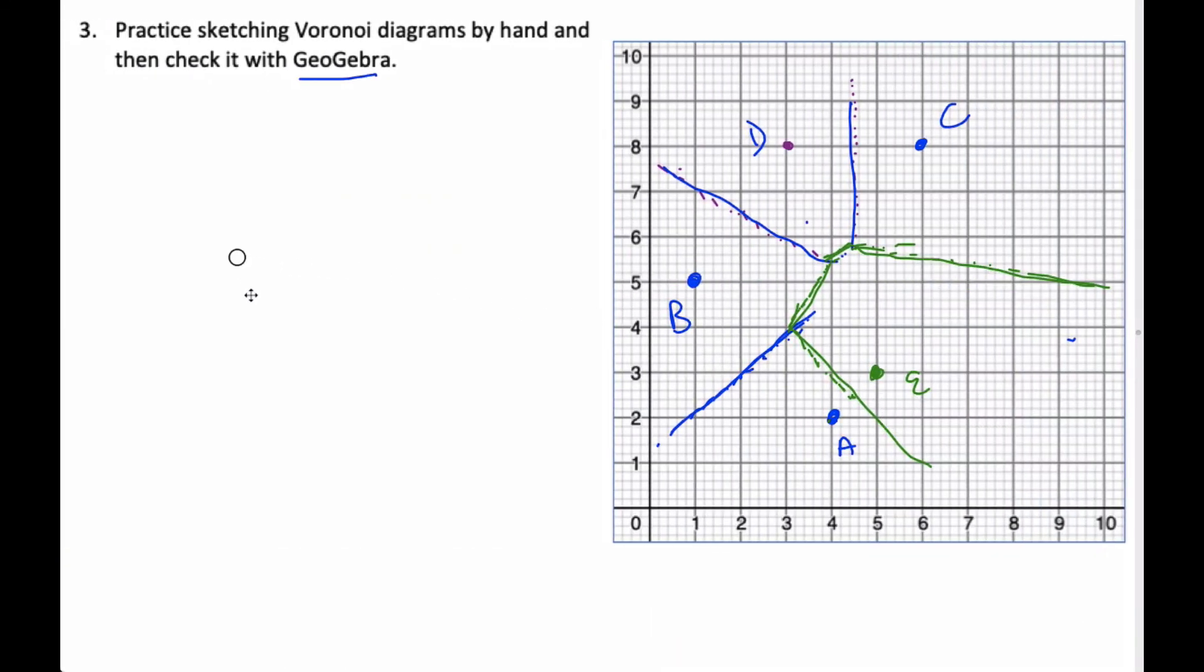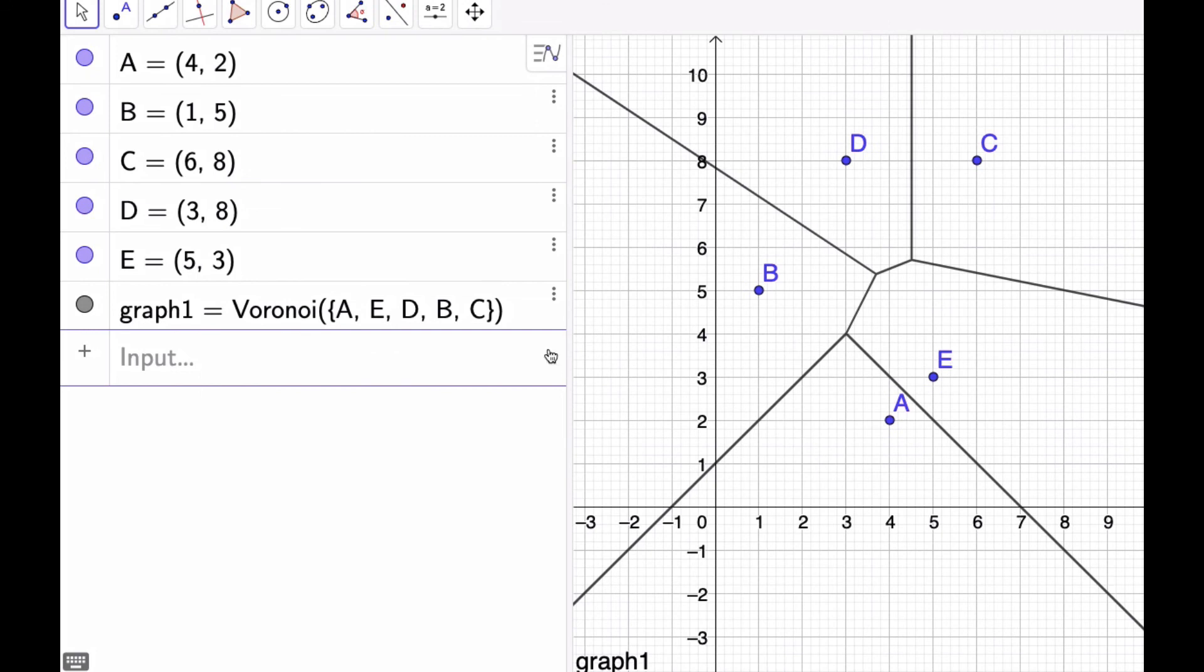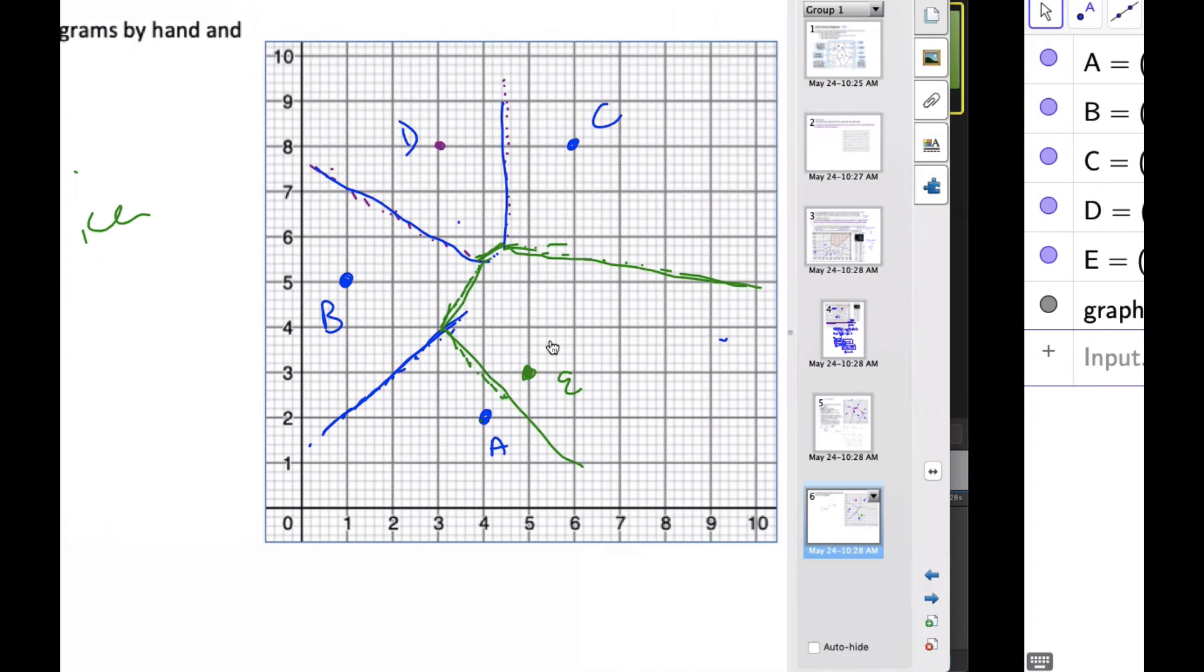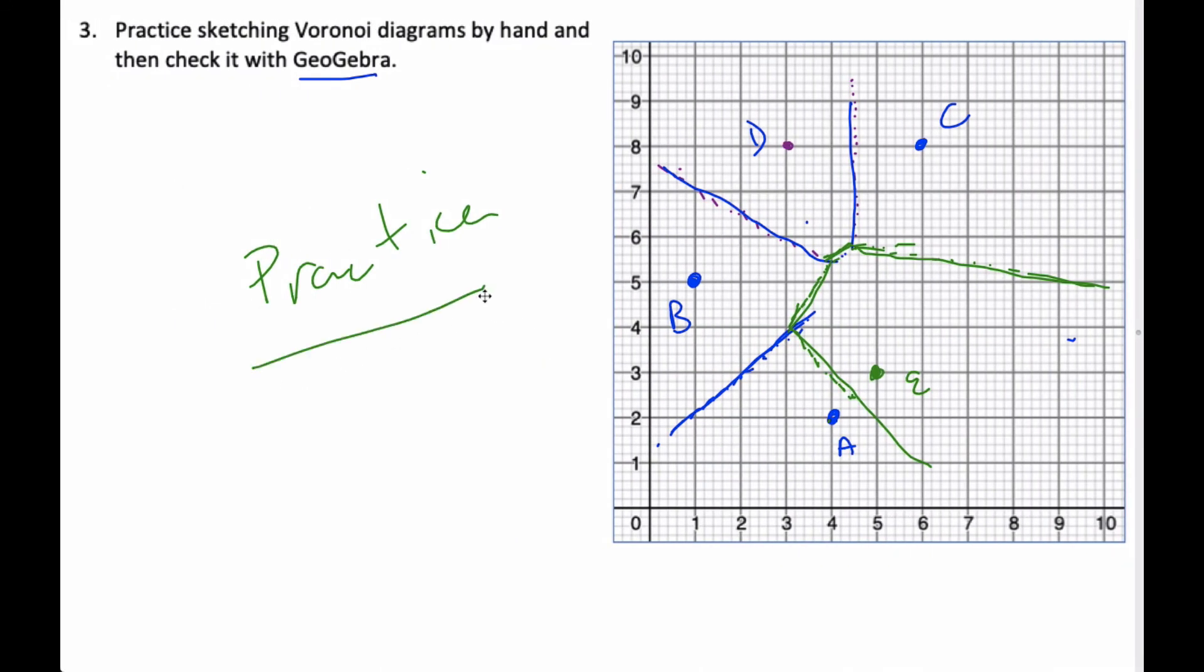And so being able to do this, I would practice, I would practice making your own and checking them with your GeoGebra. But that's how you make them. And being able to make them and visualize it will be really helpful with understanding the problem. And then we can do the nearest neighbor interpolation, and see what points would lie within D or within C and so on and so forth.